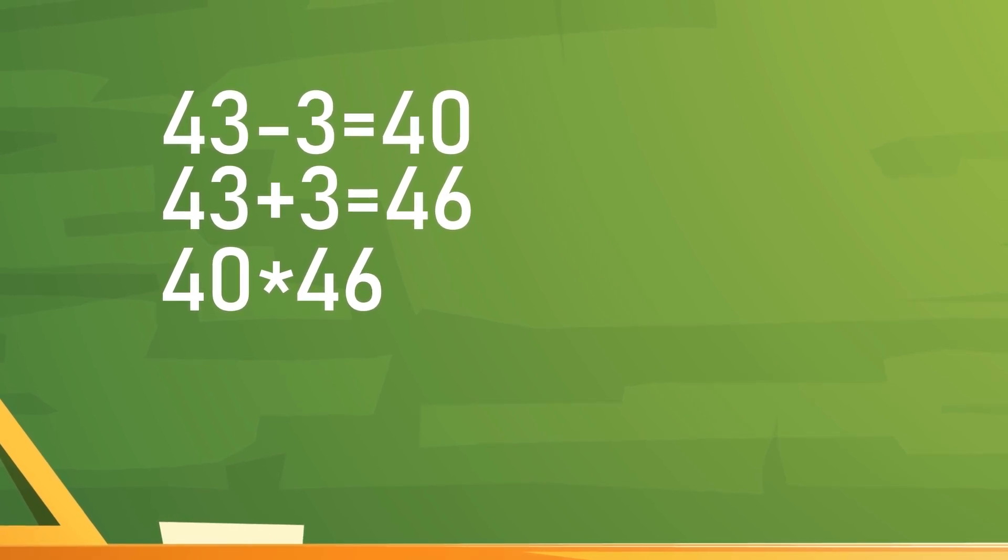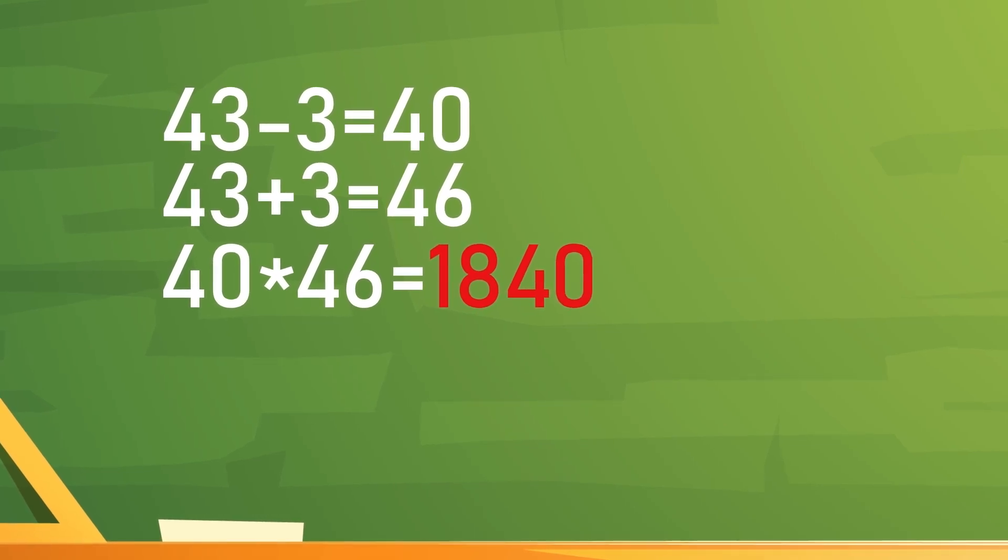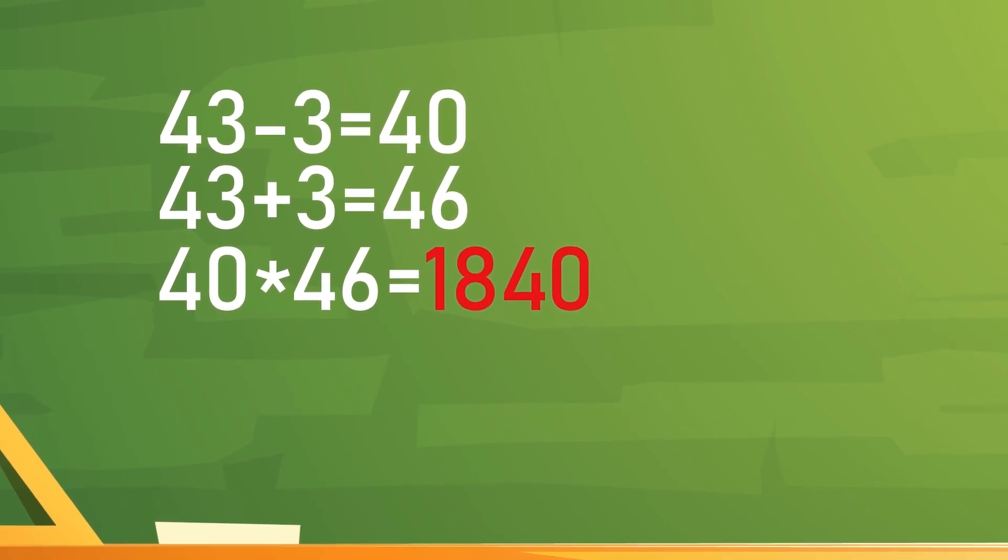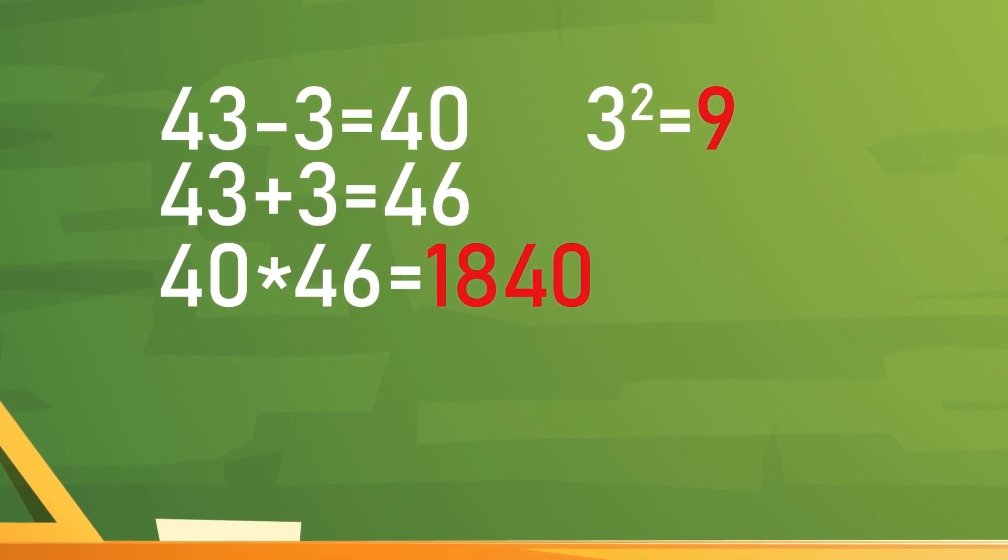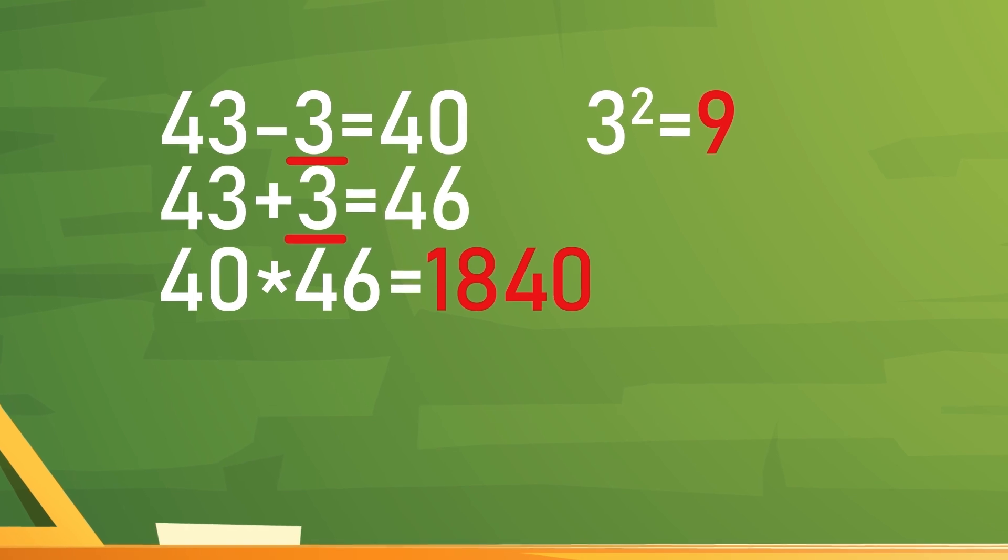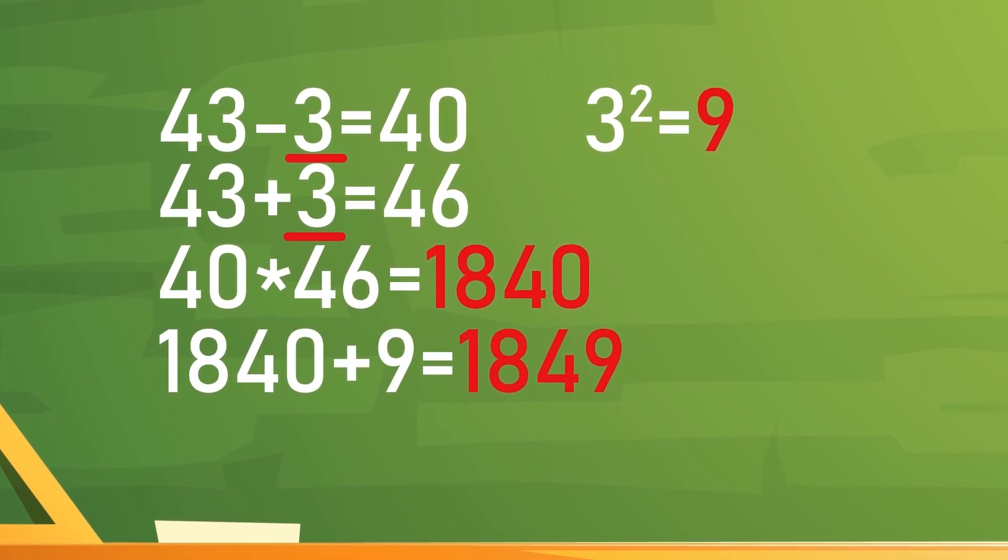Because we just need to multiply 46 by 4 and then add a zero to the right. We get 1840. Now we raise the number we used at the beginning to the square. The result is 9. We sum up these two numbers and the answer, 1849, is ready.